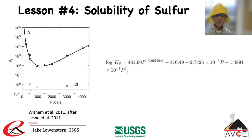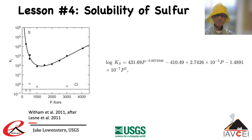Another important thing you can glean from the plot on the left is that typically, especially at relevant oxidizing conditions, there will be hundreds to thousands of times higher concentrations of sulfur in the vapor compared with the melt. You can also see that the circles at the bottom of the plot indicate K values for chlorine — a substance that is far more compatible in the melt phase compared with sulfur.